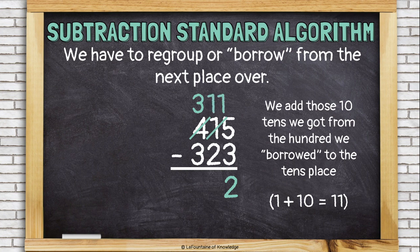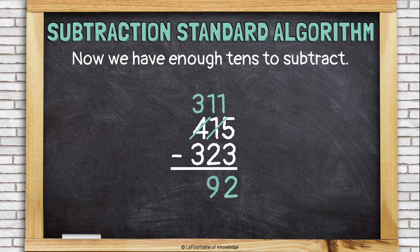And, now we can subtract. Eleven minus two is nine. And, three minus three is zero. But, we don't even really need to write that. Our answer is just 92.